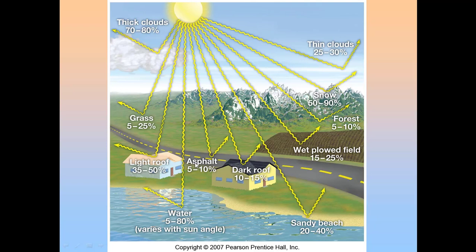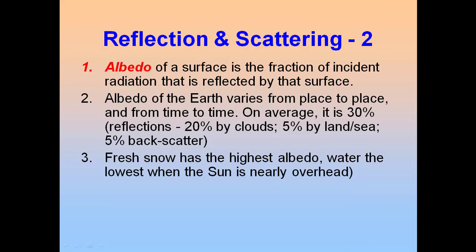Asphalt or blacktop is dark, and dark colors tend to absorb solar radiation, whereas light colors — like a light roof — reflect more solar energy than blacktop would. Snow and ice is the most reflective, reflecting about 50% to 90% of all incoming solar radiation that is backscattered. Thick clouds cool temperatures by limiting solar energy coming through, but thin clouds filter out even less solar energy — which is why you can still get a sunburn on a thin cloudy day.